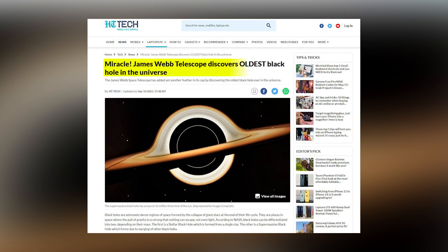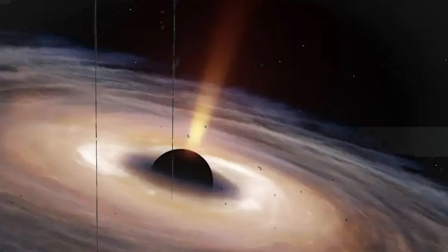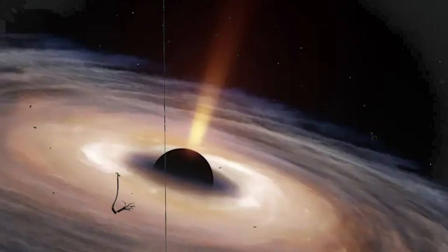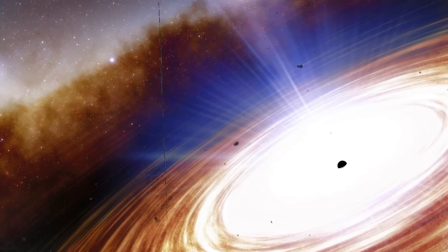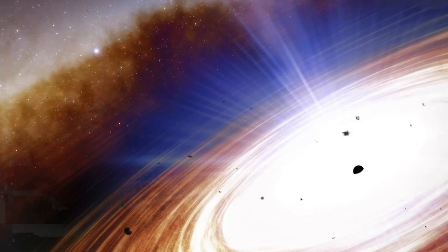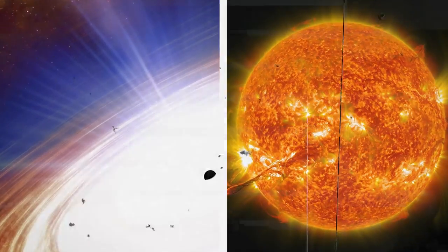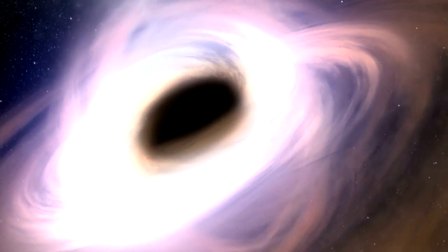The telescope has detected what could be the oldest black hole in the universe, located at the center of a baby galaxy that formed just 570 million years after the Big Bang. This cosmic giant weighs in at a staggering 10 million times the mass of our sun, making it a supermassive black hole.